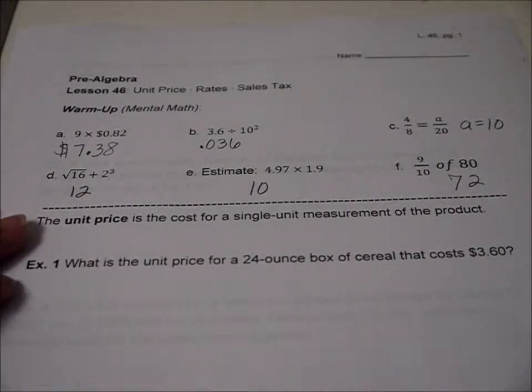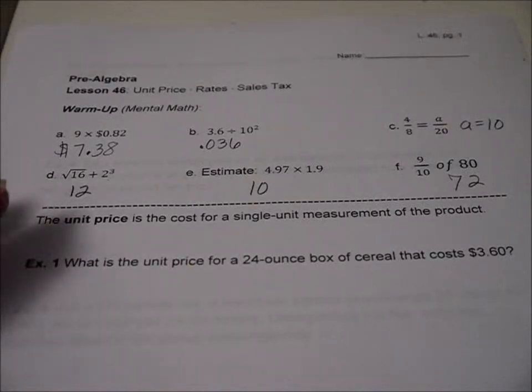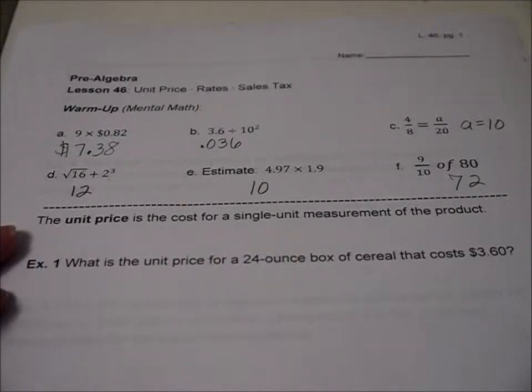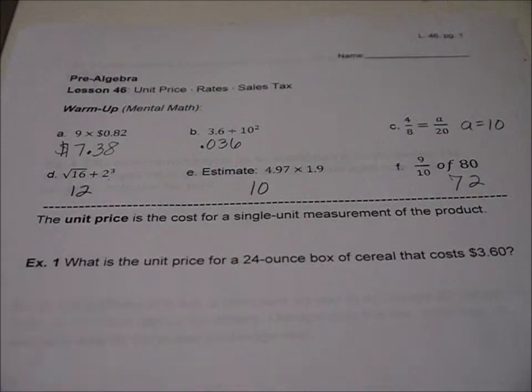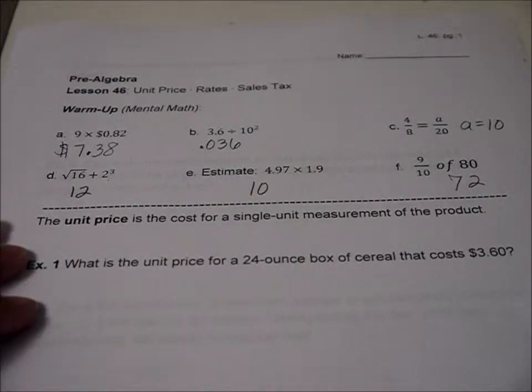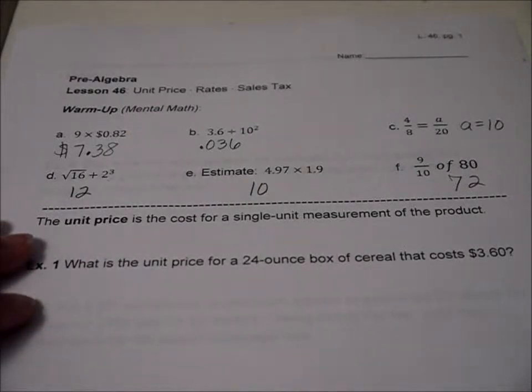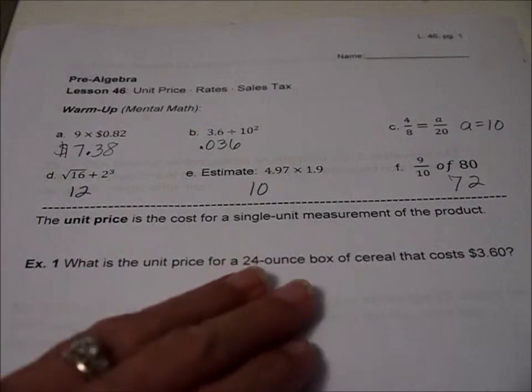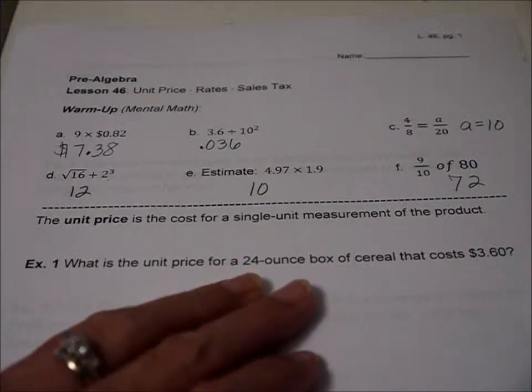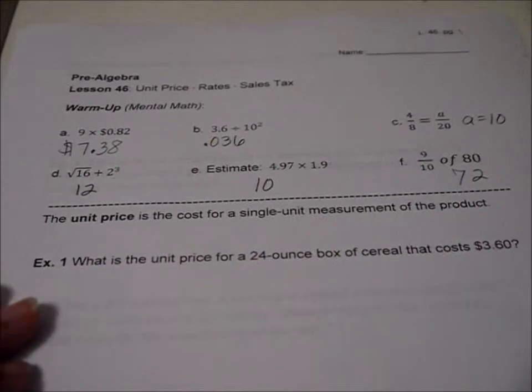Let's start with the unit price. The unit price is the cost for a single unit measurement of the product. So when you go to the store, you might see cereal boxes are a big one, because they're all different sizes and all different prices.